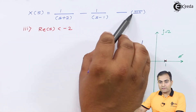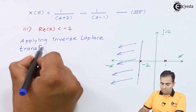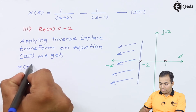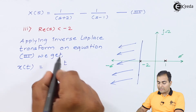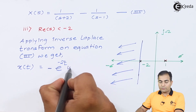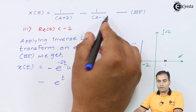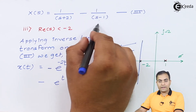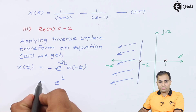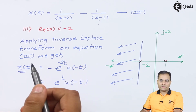Applying inverse Laplace transform on equation 3 for the left-handed ROC: for the (s+2) term, frequency shifting gives e^(-2t), and 1/s becomes unit step, but since ROC is left-handed, it is replaced by -u(-t). For the (s-1) term, frequency shifting gives e^(t), and again unit step is replaced by -u(-t). Because of the existing minus sign, this becomes +u(-t). So x(t) = -e^(-2t)·u(-t) + e^(t)·u(-t).